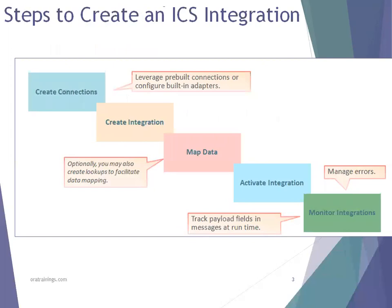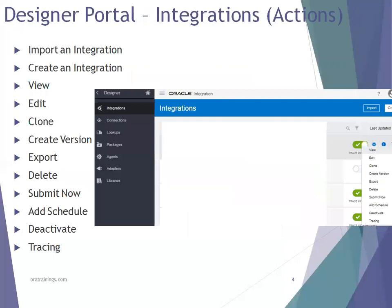These are the steps involved in creating any ICS integration. First, you have to create a connection. Once the connection is ready, you can use it while creating an integration. When creating an integration there are different types available, and based on the type you select an integration style. You'll need mapping, and once mapping is ready and your program is 100% done you can activate the integration, run it, then validate functionality by going to the monitoring platform — validate the payload, validate errors if any, then deactivate or rerun. Check the status.